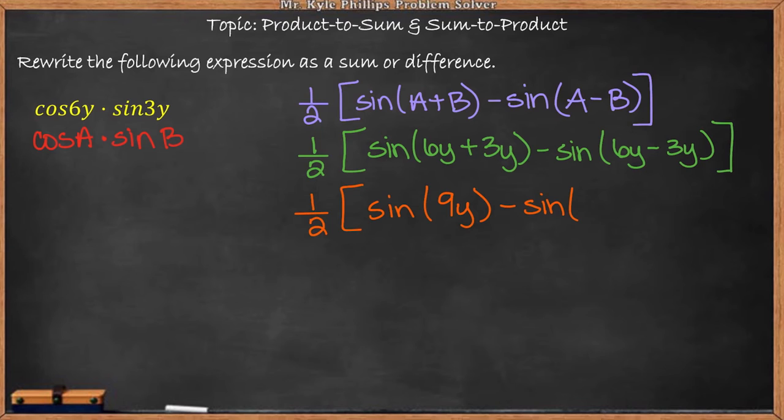Now the only thing left to do here is to distribute our 1 half. So because this is a binomial we will take the 1 half and distribute it to both terms.